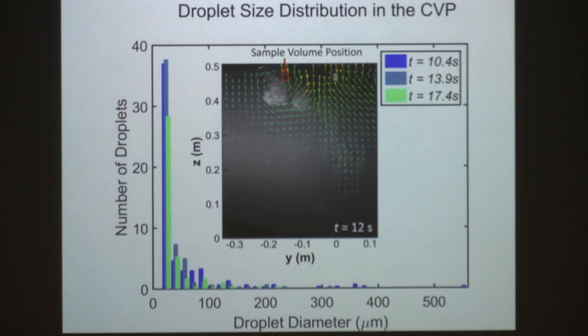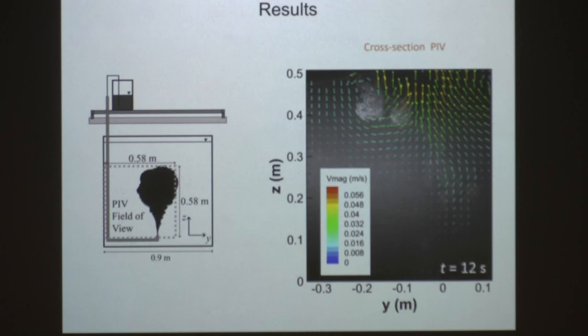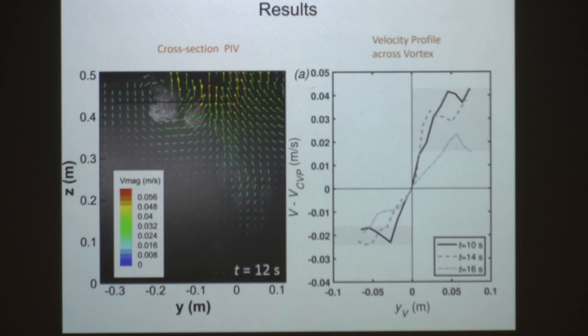We were able to really look at the flow field — taking the flow field in this counter-rotating vortex pair from our PIV data — and took a slice through it, extracting velocity profiles across this vortex. Here we have upward flow on the right-hand side and downward flow on the left-hand side, shown at the same three time points as before.